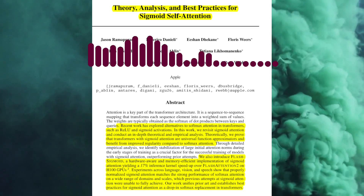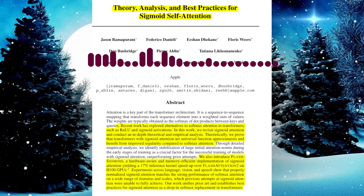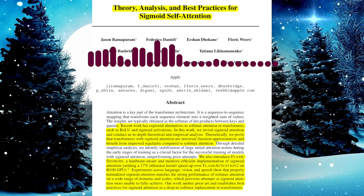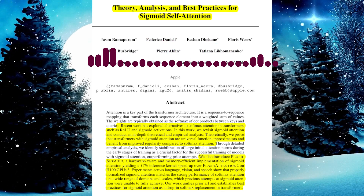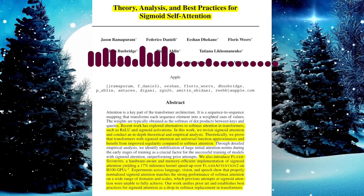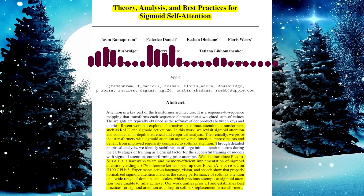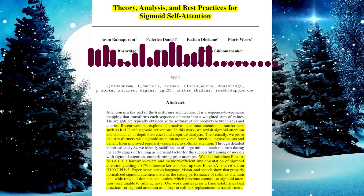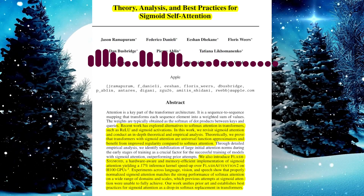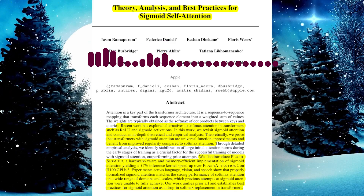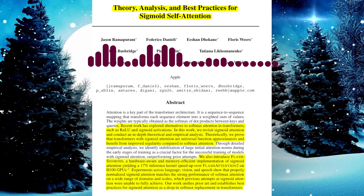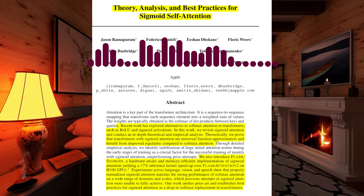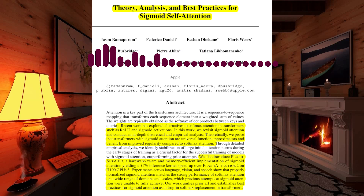Can you summarize the key contributions of this paper? The paper provides a comprehensive theoretical and empirical study of sigmoid attention as an alternative to softmax attention in transformers. They prove that transformers with sigmoid attention are universal function approximators with improved regularity, and they identify layer scale and the prevention of large initial attention norms as key factors for successful training. Furthermore, they introduce Flash Sigmoid, a memory-efficient implementation that provides a significant inference kernel speed-up. Their extensive experiments across language, vision, and speech domains demonstrate that properly normalized sigmoid attention can match the performance of softmax attention on various tasks and scales.